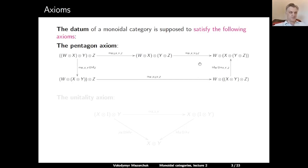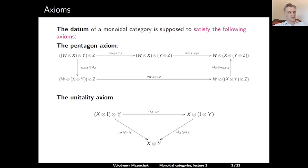The second axiom is called the unitality axiom. For any objects X and Y, we can form two tensor products: X tensored on the right with I and then tensored with Y, or X tensored with I tensor Y. We have the associator map for X, I, and Y between these two bracketings. Applying the right uniter for X tensored with the identity on Y, or the identity on X tensored with the left uniter for Y, both lead to X tensor Y. This triangle diagram is supposed to commute. These are the two axioms of a monoidal category.